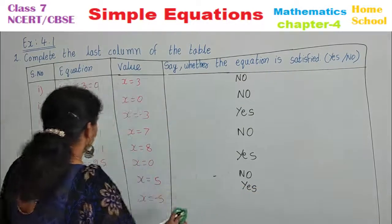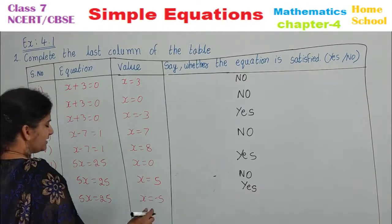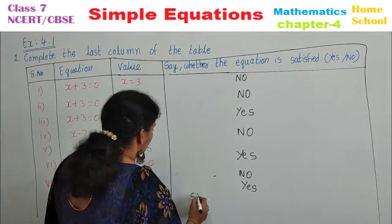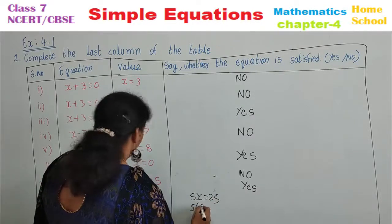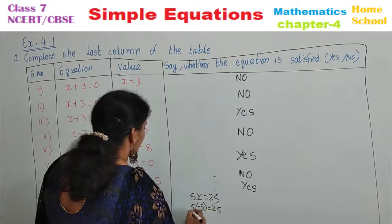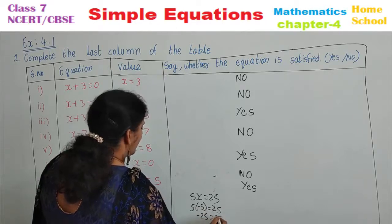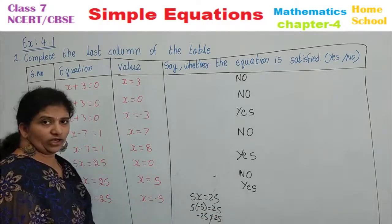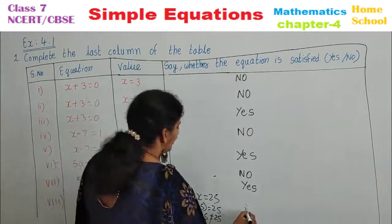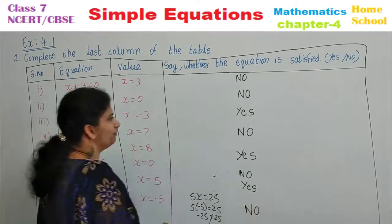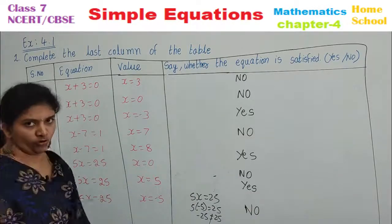Eighth one: 5x equals 25, with x equal to minus 5. Substitute: 5 times minus 5 equals minus 25. Plus times minus gives minus, so minus 25 is not equal to plus 25 — they differ in sign. Therefore, write no; it is not satisfied.